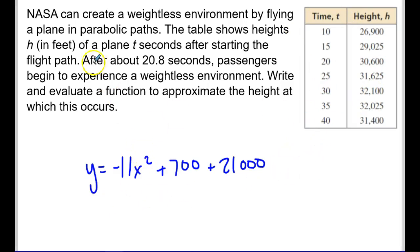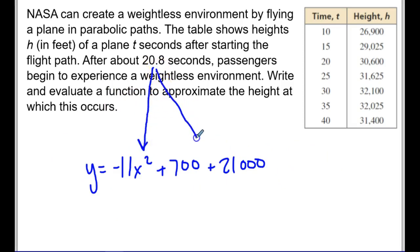Now that I have the equation, I answer the second part: after about 20.8 seconds, passengers experience a weightless environment — write and evaluate a function to approximate the height. I just plug x = 20.8 into the equation anywhere I see x. Go ahead and do that yourself to find the approximate height.